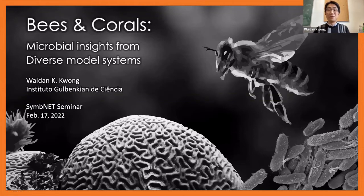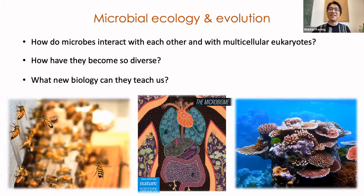I started the lab about three months ago, so I don't have any new data to show you just yet. For this talk I want to share a couple of stories from my previous work that will help illustrate my interests and the way I do research, which I hope to carry forward into the new lab. Broadly speaking, I'm interested in microbial ecology and evolution through the lens of symbiotic systems — how do microbes interact with each other and with multicellular eukaryotes, how have they become so diverse, and what new biology can they teach us?